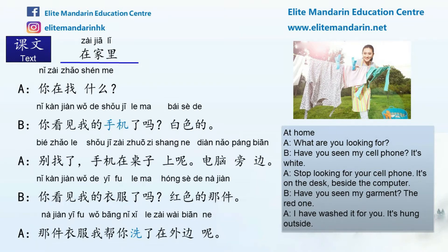课文4 在家里 — Text 4: At Home. 你在找什么？你看见我的手机了吗？白色的。别找了，手机在桌子上呢，电脑旁边。你看见我的衣服了吗？红色的那件。那件衣服我帮你洗了，在外边呢。